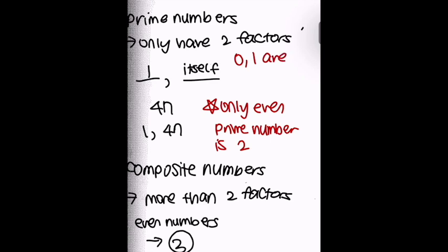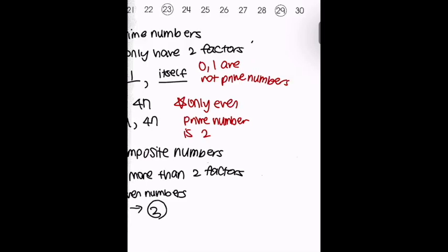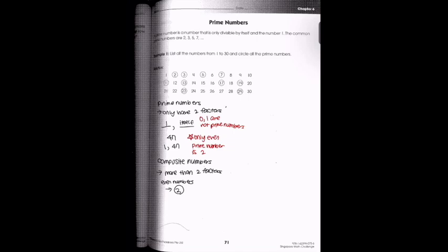The only even prime number is going to be two. Also, zero and one are not prime numbers. One is not a prime number because its only factor is one — it has one factor instead of two factors. That was a simple review of prime numbers.